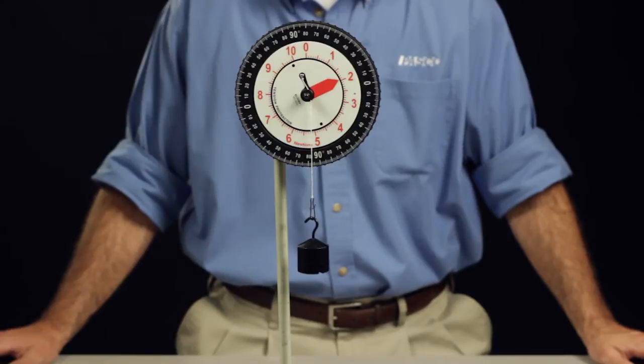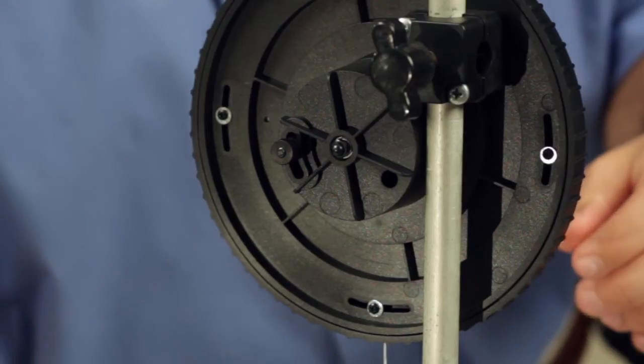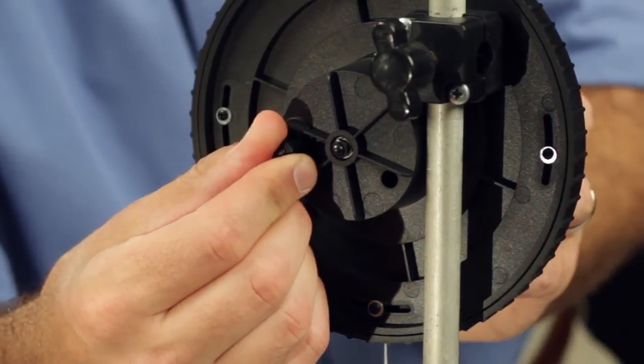The torsion spring scale is carefully calibrated at the factory and can be zeroed by the user using the thumb screw on the back.